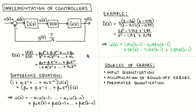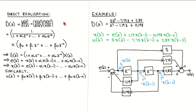For the rest of the video, we will look at three alternative ways to realize a controller which might produce a more accurate controller calculation. The first alternative, the direct realization, is very similar to the difference equation realization. The idea is to introduce an intermediate signal x and write the denominator part of the controller transfer function as the transfer function from the controller input to x, and the numerator as the transfer function from x to the controller output. After performing the inverse z-transform, we arrive at an equation to calculate x of k in terms of the current controller input and previous values of x.